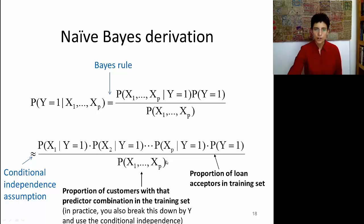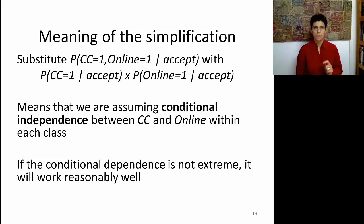And finally, in the denominator, we need to find the proportion of customers that have this particular combination in the dataset. We can have the same problem where we don't have this particular profile in our dataset, and then we'll break this down using conditional independence. Let's think for a minute what this simplification means. When we're substituting a probability of an entire profile by individual attributes and multiplying them, it means we're assuming a conditional independence between owning the bank's credit card and doing online banking for a particular class, for the acceptors or for the non-acceptors. Although these two predictors are likely to be dependent conditionally, if the dependence is not extreme, we can still get a pretty nice and smart classifier.